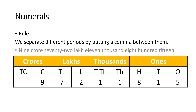How to write a numeral if a number name is given to you? The rule is: we separate different periods by putting a comma between them. Here is a number name: 9 crore, 72 lakh, 11,815. I have written this in the Indian place value chart. We will write this by putting commas between periods: 9, comma, 72, comma, 11, comma, 815. So here is your number: 9,72,11,815.